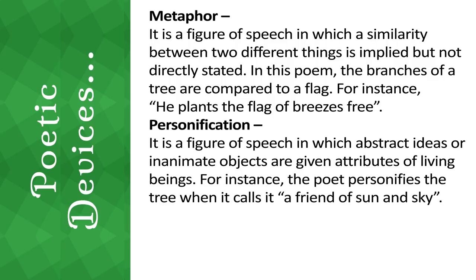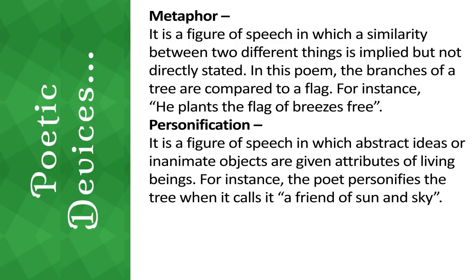Form and Structure: The poem consists of three stanzas of nine lines each. It roughly follows the rhyme scheme A-B-A-B-B-C-C-A-A. The rhyming words in the first stanza are: tree/free, sky/high/I, bird/heard, harmony/tree. The first stanza reads: 'What does he plant who plants a tree? / He plants a friend of sun and sky, / He plants the flag of breezes free, / the shaft of beauty towering high. / He plants a home to heaven and I, / For song and mother croon of bird, / In hush and happy twilight heard, / The treble of heaven's harmony. / These things he plants who plants a tree.'